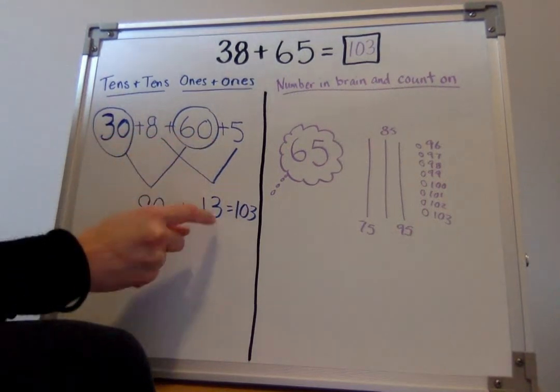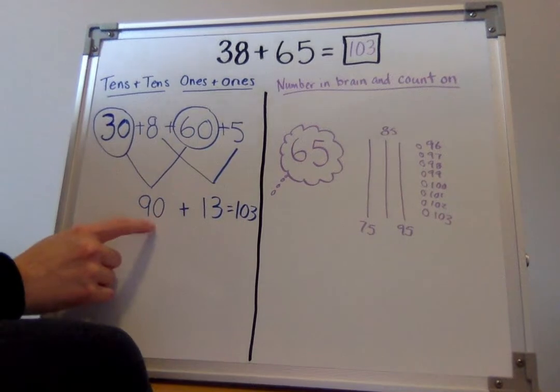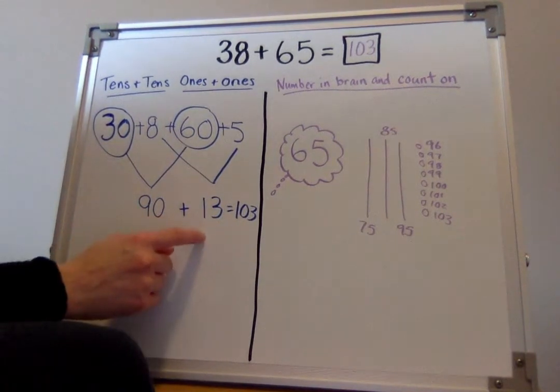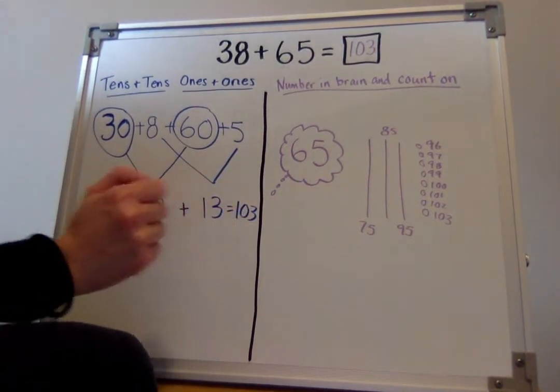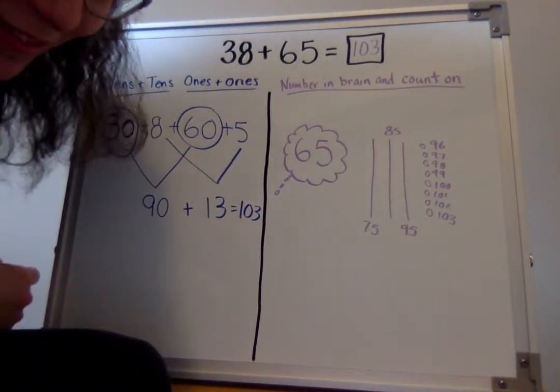Then I did 8 plus 5 and I got 13. Then I had to add 90 plus 13 and I got 103. You got that too? That was so smart.